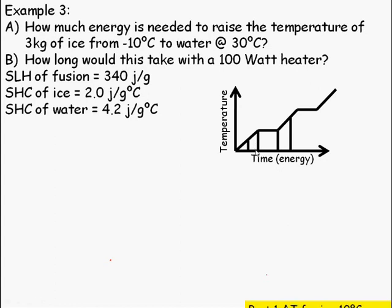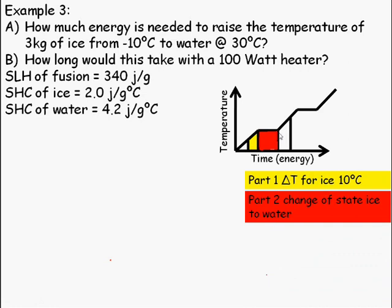We can break it down into three parts. So this part, part 1, here is a change of temperature for ice. So the ice changes temperature by 10 degrees Celsius to get up to 0 degrees Celsius. Part 2 was a change of state, this red part, and we had to change the state of the ice. Part 3, again, was a change of temperature for water. So we've gone specific heat capacity, specific latent heat, specific heat capacity.